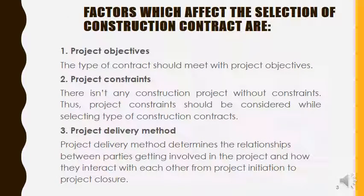Factors which affect the selection of construction contract: first, project objective — the type of contractor should meet the project objective based on what type of construction you are carrying out. Second, constraints — constraints will be there everywhere. For example, COVID-19 is a constraint where construction work progress cannot be carried out; natural calamities are also constraints. Third, project delivery method — this determines the relationship between parties involved in the project and how they interact from project initiation to project closure.